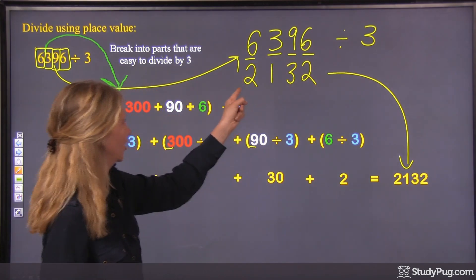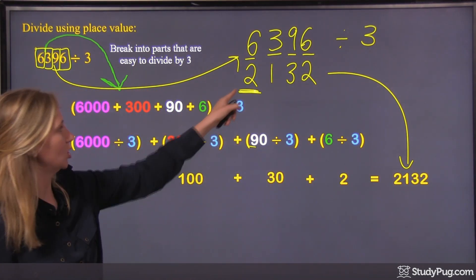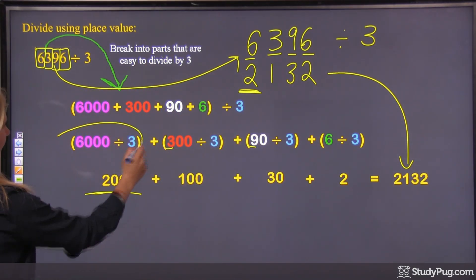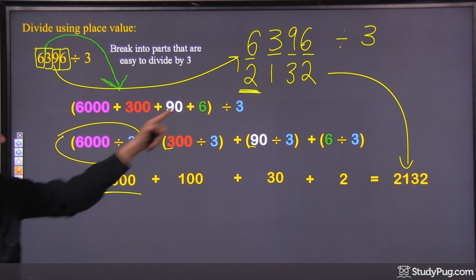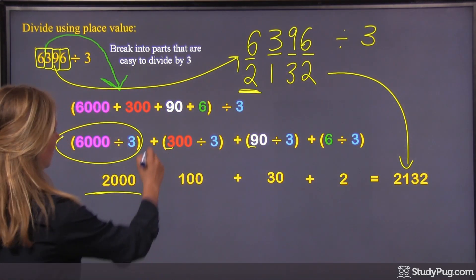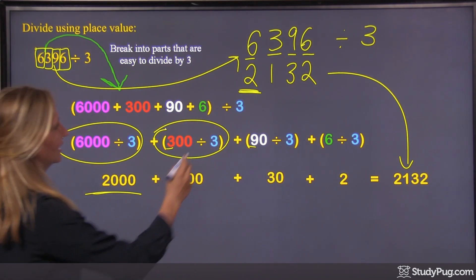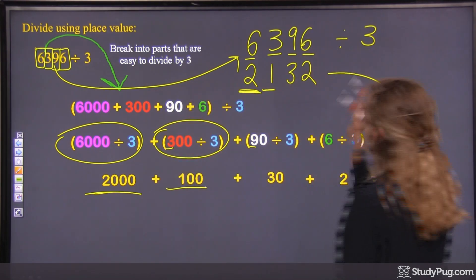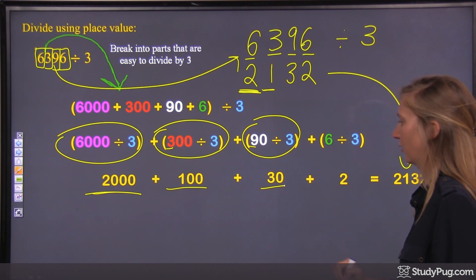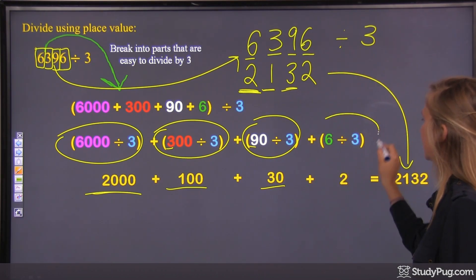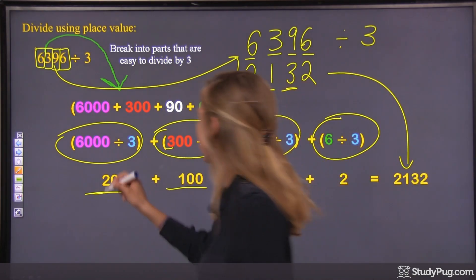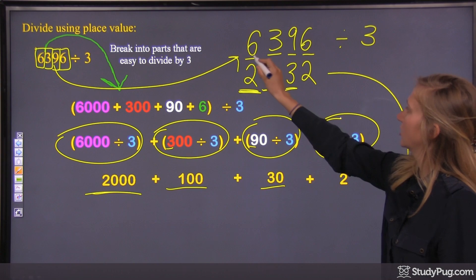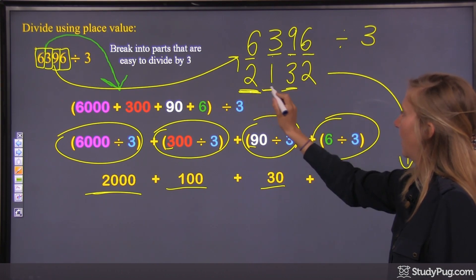Because we're doing the exact same thing with that shortcut. 6 divided by 3 gives 2, but this 2 is in the thousands place, so it actually represents 2,000 — just like the step 6,000 divided by 3. The next step, 3 divided by 3 gives 1, and that's the 300 divided by 3 step, which gives us 100 — the 1 is in the hundreds place. Similarly, 9 divided by 3 is the 90 divided by 3 step, giving 30 — the 3 is in the tens place. And 6 divided by 3 handles the ones. So place value does make it easier.